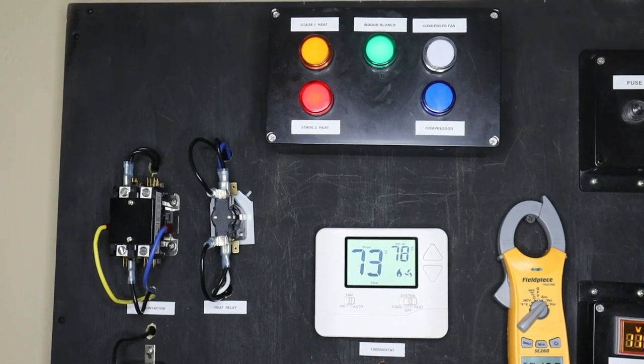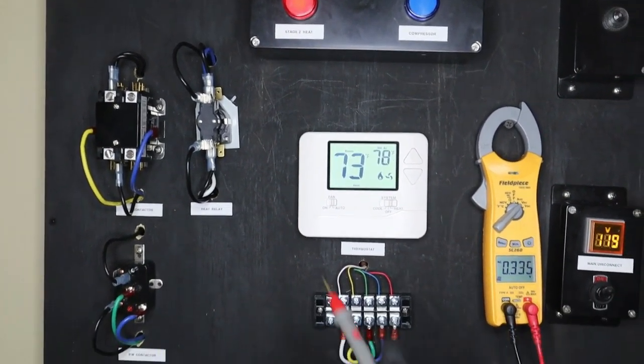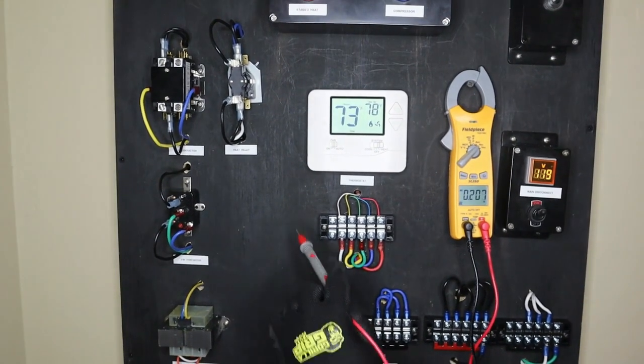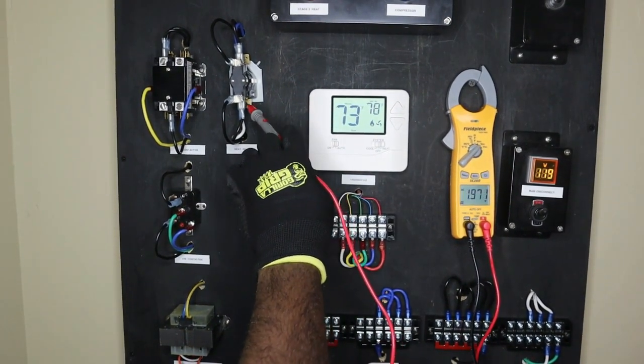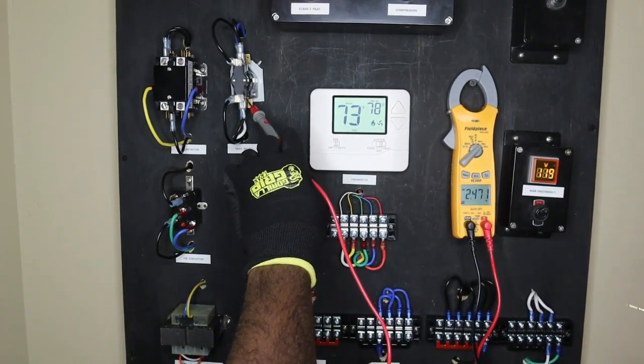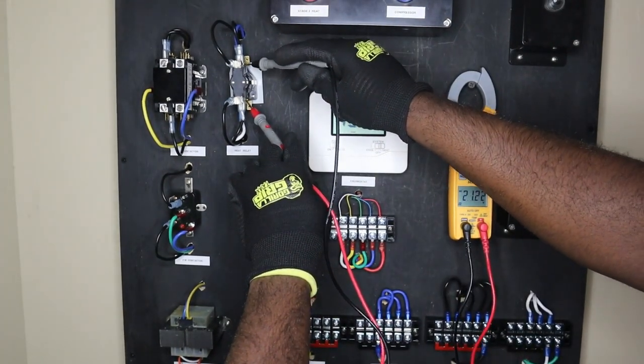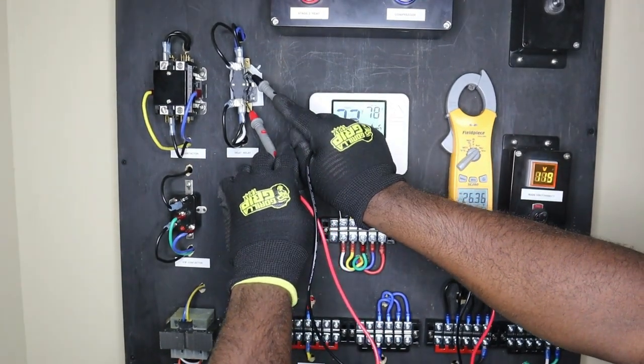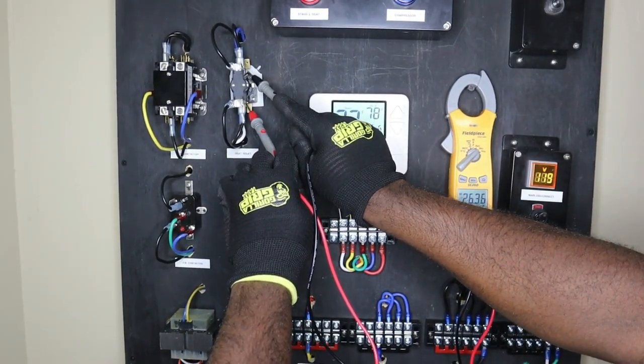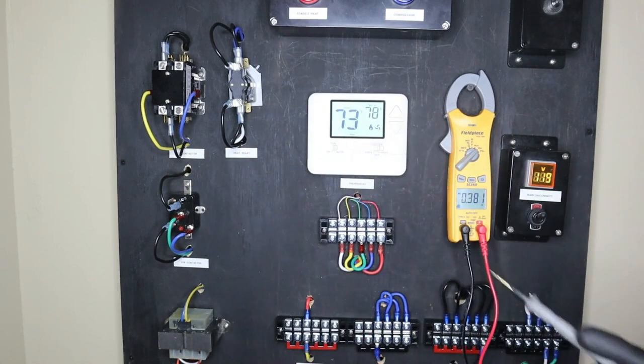Now let's check the control or the coil side of our heat relay. So the white wire from our thermostat sends 24 volts AC to one side of the coil and our blue which is our low voltage common. So as you can see we're measuring 26.3 volts to our coil.